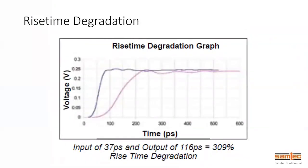If you have too much insertion loss within your channel, that can affect the rise time of your system. Looking at the pulse train here, the input to output is about 37 picoseconds. However, with the second signal you can see that rise time has gone out to 116 picoseconds — that's a big rise time degradation. What we're trying to illustrate is there's a constant tradeoff between understanding these SI parameters — insertion loss, return loss — and how they affect your system specific to your application.